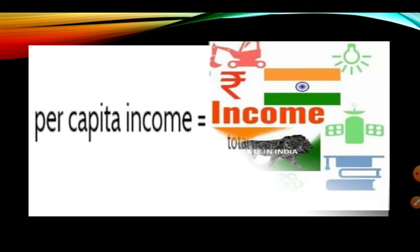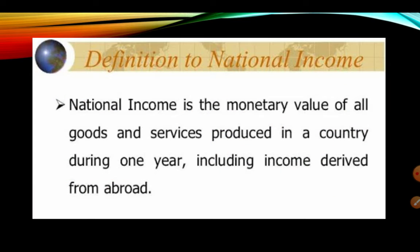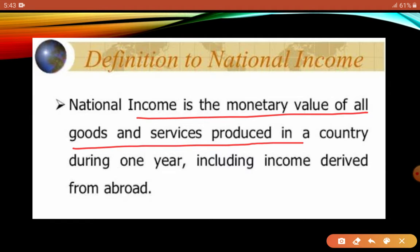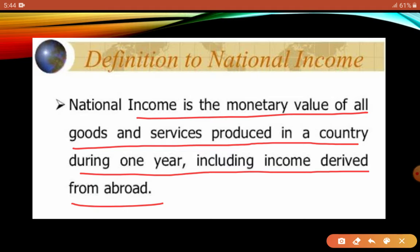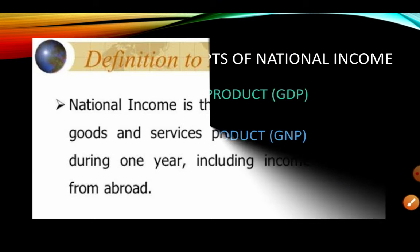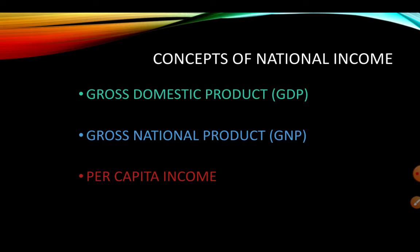Now let's understand what national income is. National income is the monetary value of all goods and services produced in a country within one year, including income derived from abroad — meaning the income earned by citizens of that country in other countries is also included. So national income covers both domestic production and income earned overseas by the country's citizens. Related concepts are gross domestic product (GDP), gross national product (GNP), and per capita income.